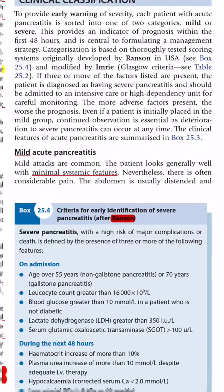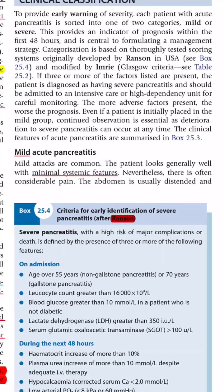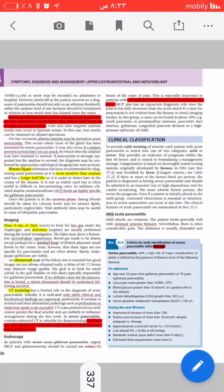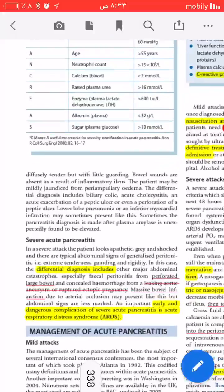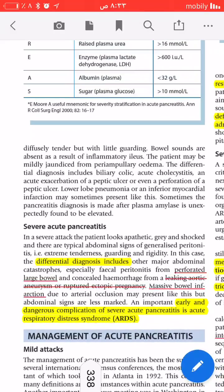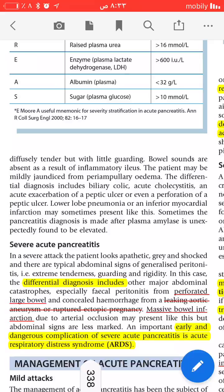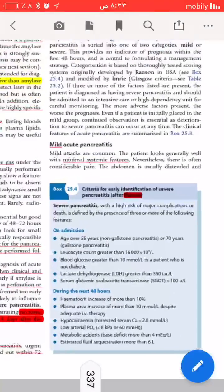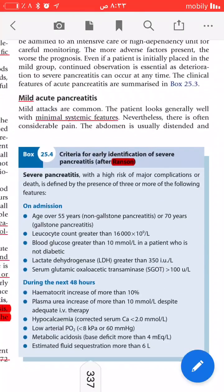Clinical classification: mild acute pancreatitis has minimal systemic features. Severe acute pancreatitis has differential diagnoses including perforated large bowel, leak, aortic aneurysm rupture, ectopic pregnancy, and massive bowel infarction. An early and dangerous complication of severe acute pancreatitis is acute respiratory distress syndrome (ARDS).